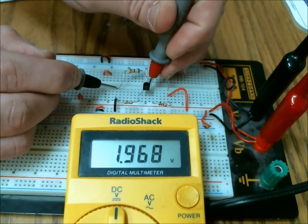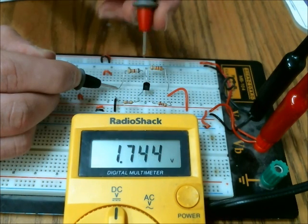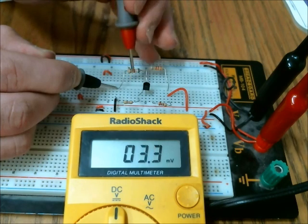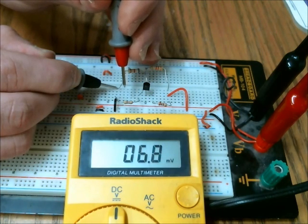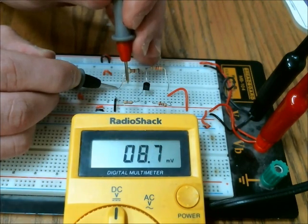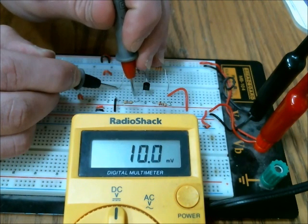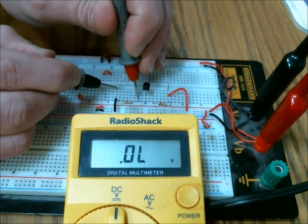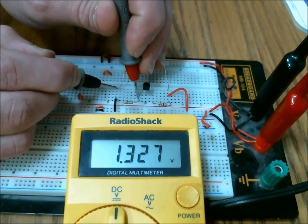Now I'm going to measure the voltage across RE which I calculated out to be 1.35 volts. So quite close.